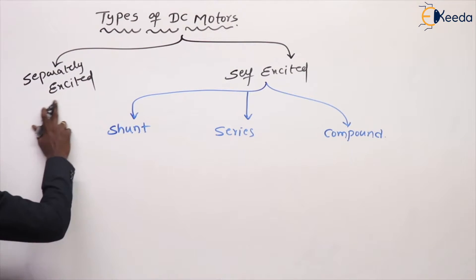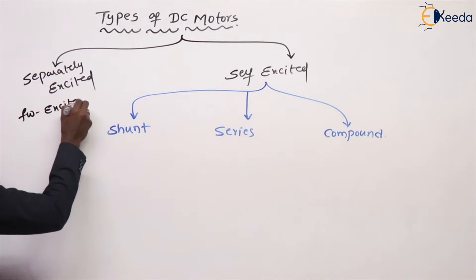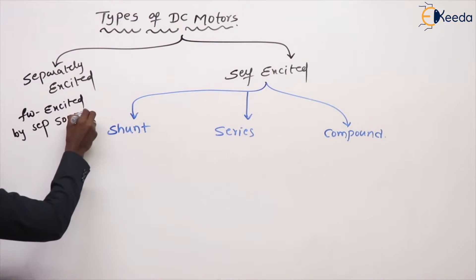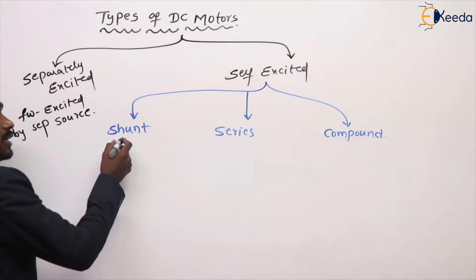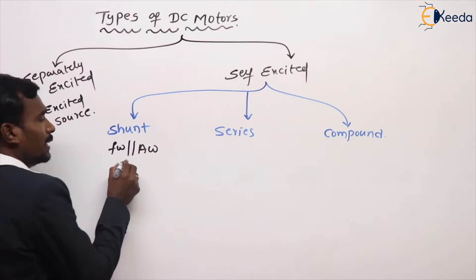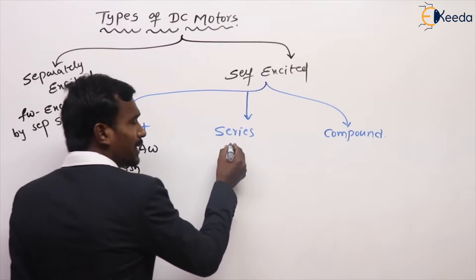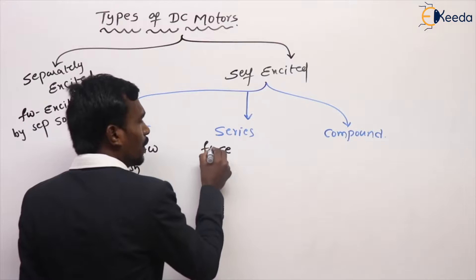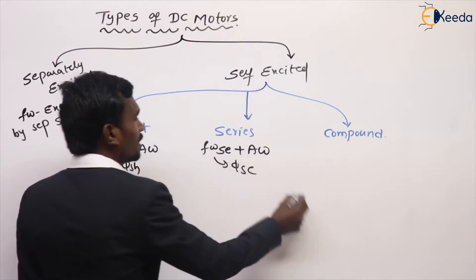Separately excited means the field winding is excited by a separate source, as we saw in generators. Shunt motor means the field winding is in parallel to the armature winding, which produces field flux. Series motor means the series field winding is in series to the armature winding, which produces the series flux.